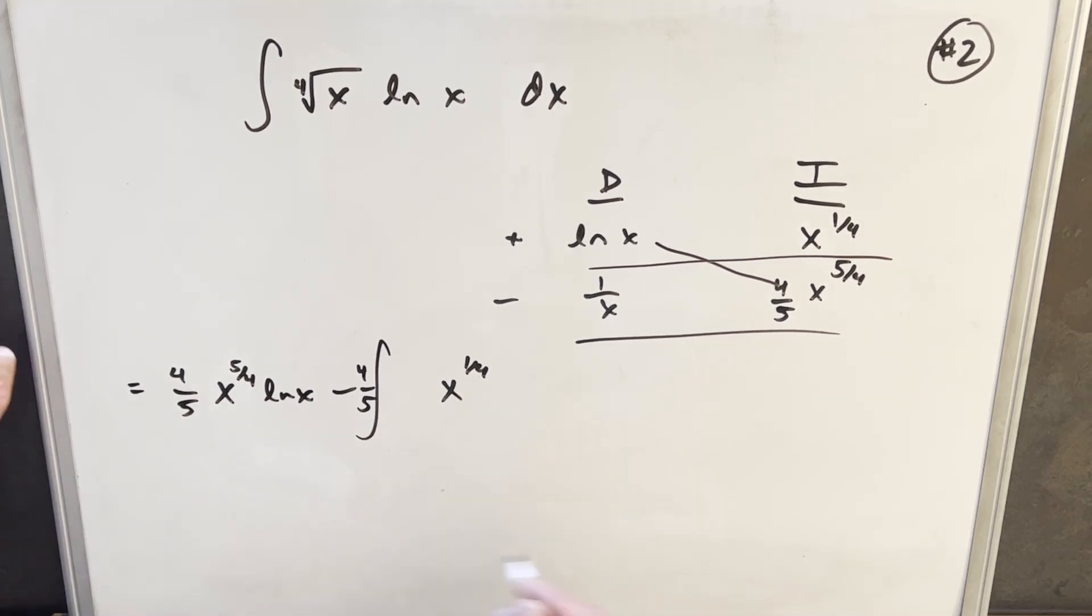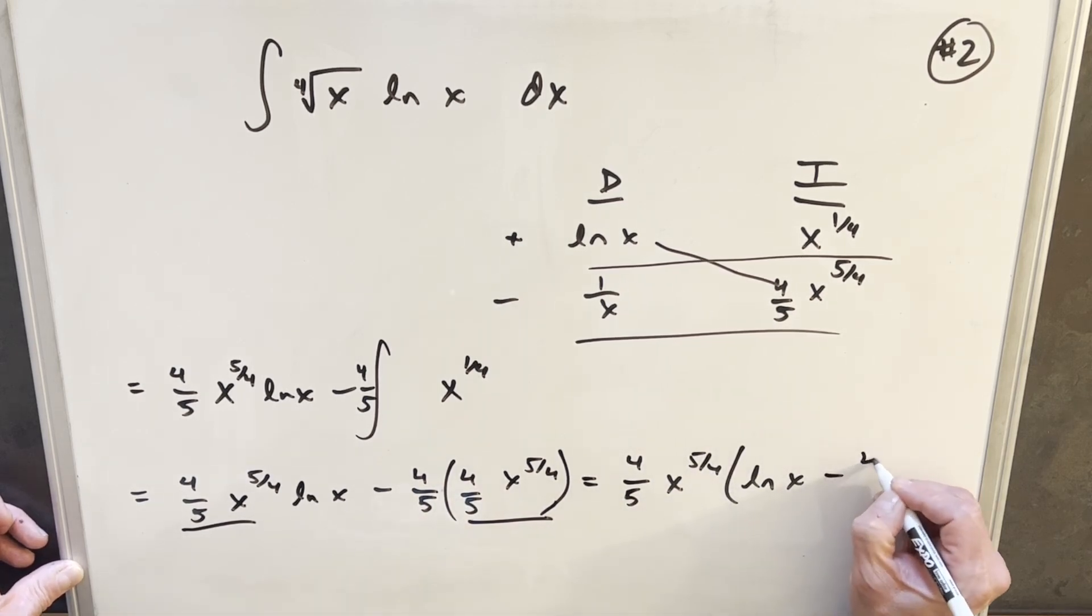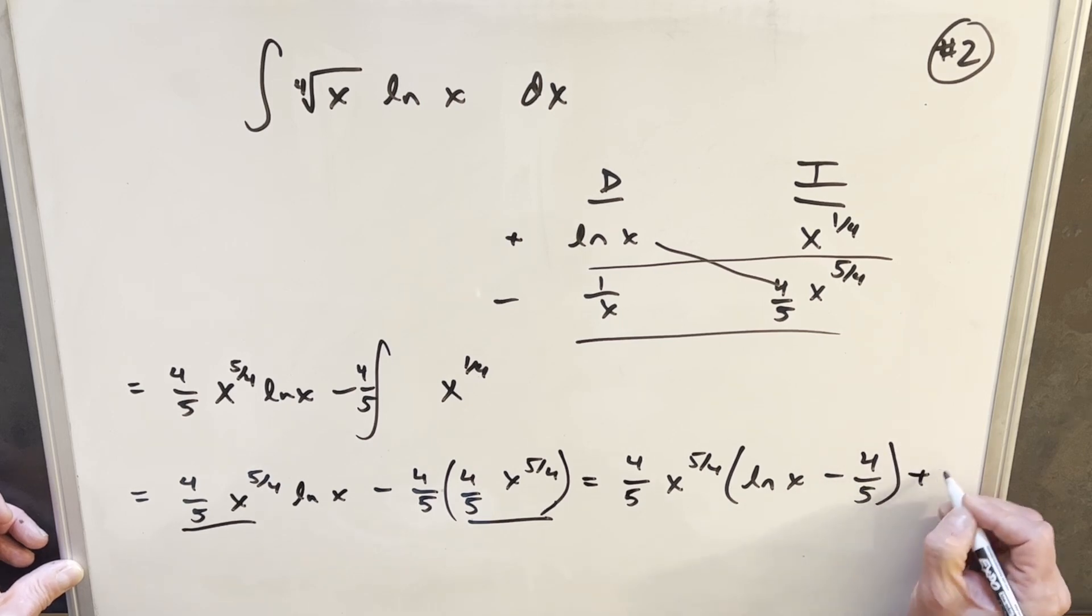So let me just rewrite this, and we'll see if we can finish it off. Okay, so now we just plugged in the value for this integral right here. I think what MIT did is they distributed the four-fifths. I think I'm going to do it the other way, actually factor it out, because we have this in common with this right here. So if I factor that out, we'll have four-fifths x to the five-fourths. And then we'll have just this ln of x minus four-fifths plus c.